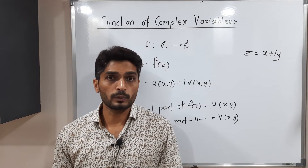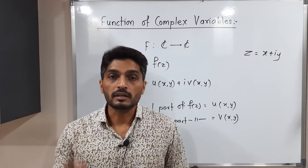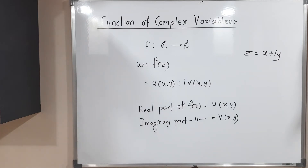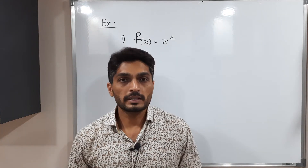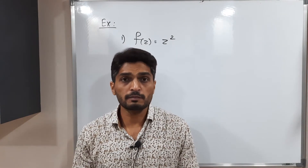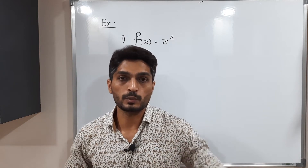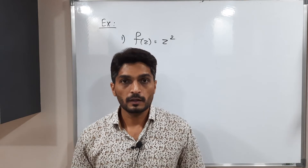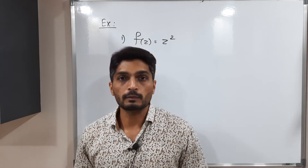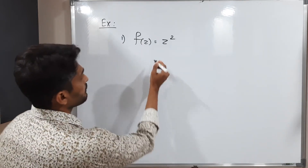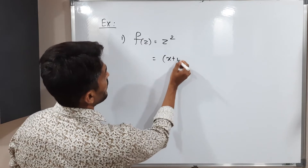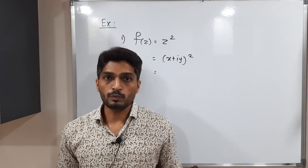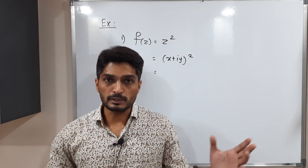Let us discuss a few examples where we will find how to separate the real and imaginary parts of a given function. The first example: the given function is f(z) = z². We have to express it as real part plus i times imaginary part. We put z = x + iy, so it becomes (x + iy)².